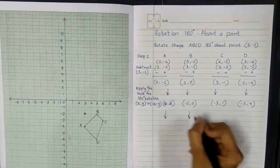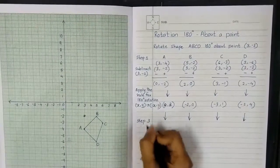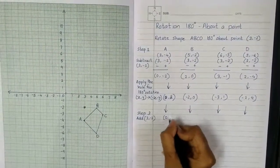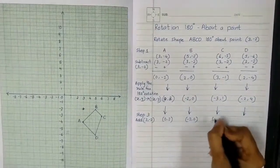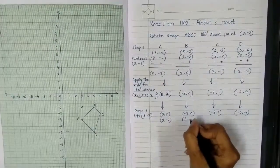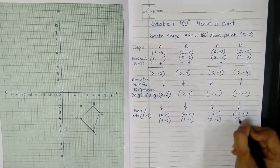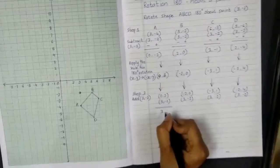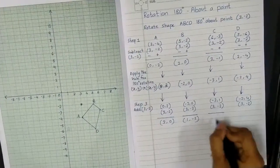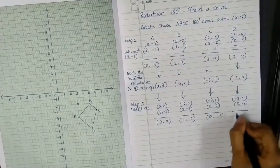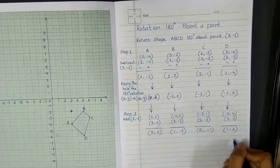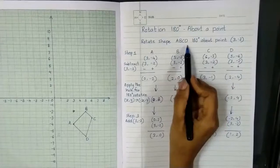After this, step number three: add the given point. We add the center of rotation (3, -2) to all the newly obtained points. After adding 3 and -2 everywhere: A gives (3, 0), B gives (1, -2), C gives (0, -1), and D gives (1, 2). These are my final coordinates after shape ABCD rotates 180 degrees about point (3, -2).